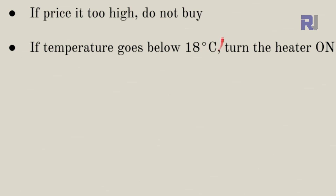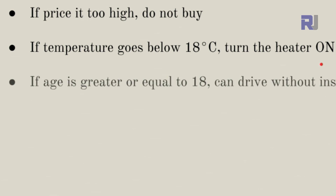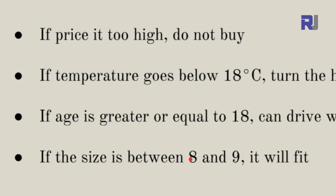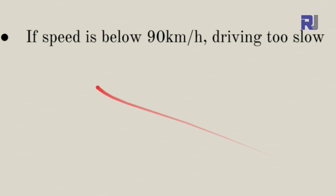In that example, the temperature condition triggers the action of turning on the heater. If age is greater than or equal to 18, the person can drive without an instructor — that is the condition, and allowing the person to drive is the action. If the size is between 8 and 9, it will fit. Or if speed is below 90 km/h, the action is 'driving too slow.'